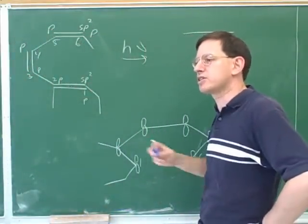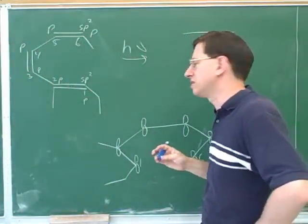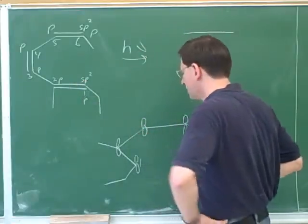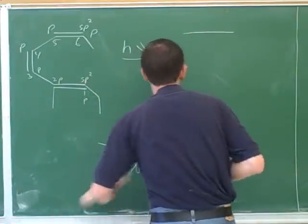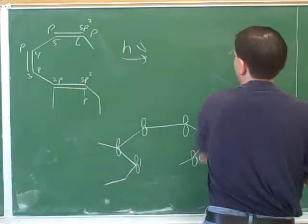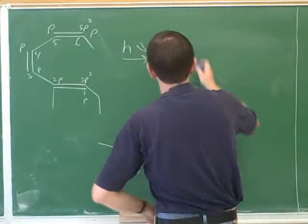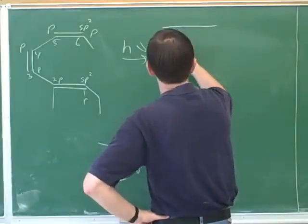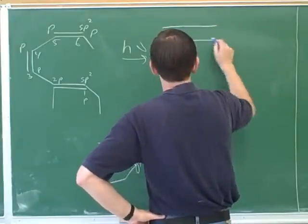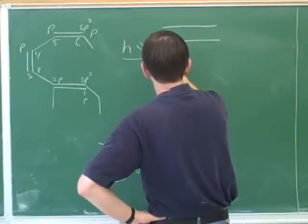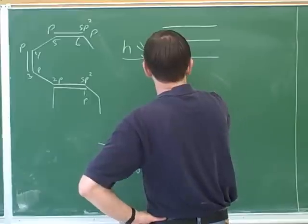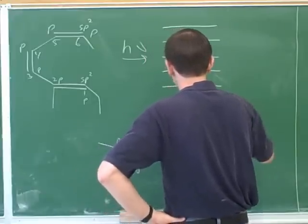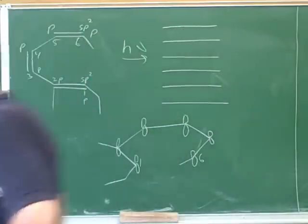Conservation of orbitals says that if you have six overlapping p atomic orbitals, then you should be creating six pi molecular orbitals. So I'll make six levels: one, two, three, four, five, six.